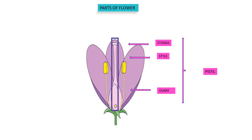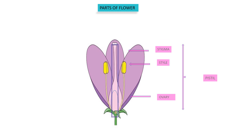After fertilization, the ovary becomes a fruit and the ovule becomes a seed. When you are eating a fruit, you are eating the ripened ovary of the flower.